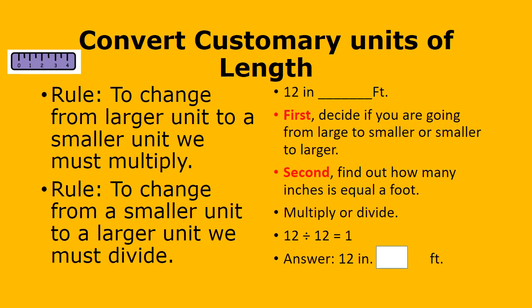Now the second problem: 12 inches equals blank feet. Here we're going from inches to feet, from smaller to larger, so we divide. How many inches is in 1 foot? 12. So we divide 12 into 12 equals 1, and that is our answer.